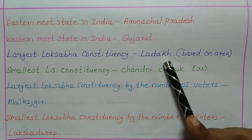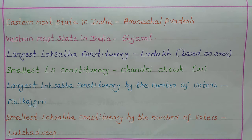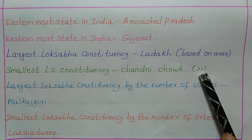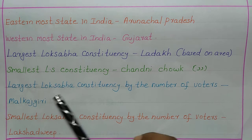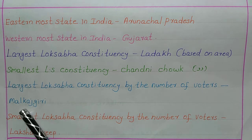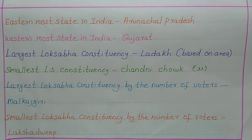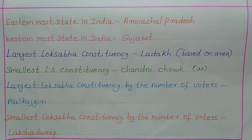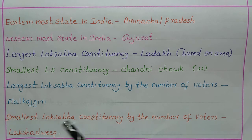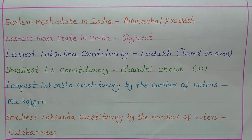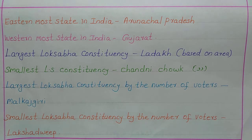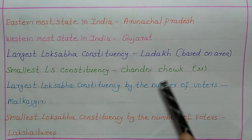The largest Lok Sabha constituency based on area is Ladakh, and the smallest Lok Sabha constituency based on area is Chandni Chowk. The largest Lok Sabha constituency by number of voters is Malkajgiri, which is in Telangana. The smallest Lok Sabha constituency by number of voters is Lakshadweep. So the most voters are in Malkajgiri and the least are in Lakshadweep, while by area, the largest is Ladakh and the smallest is Chandni Chowk.